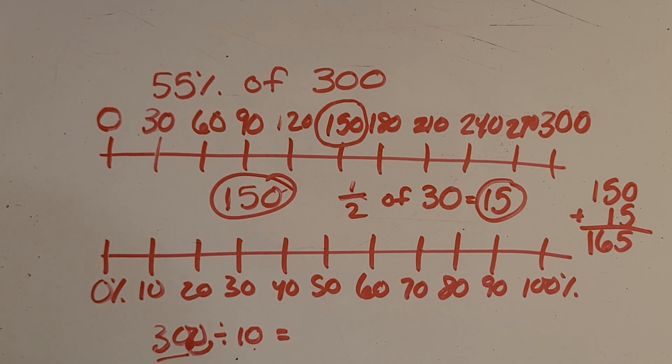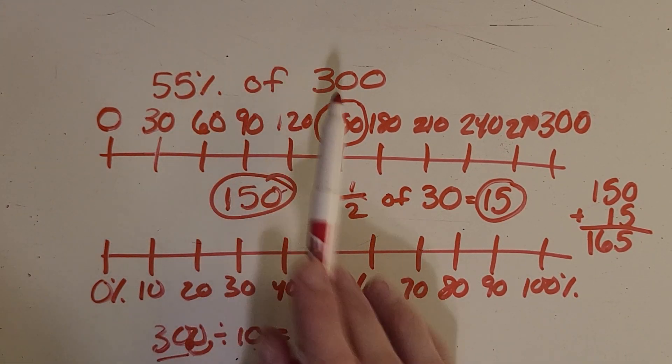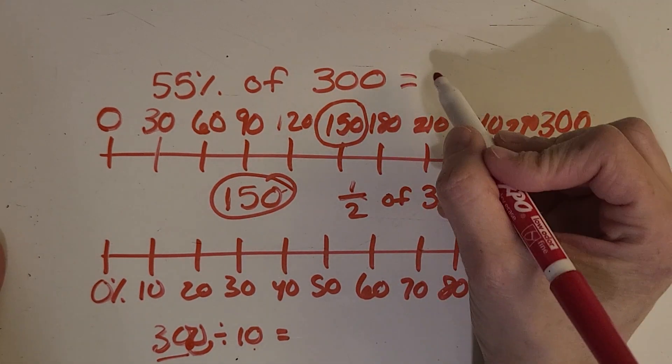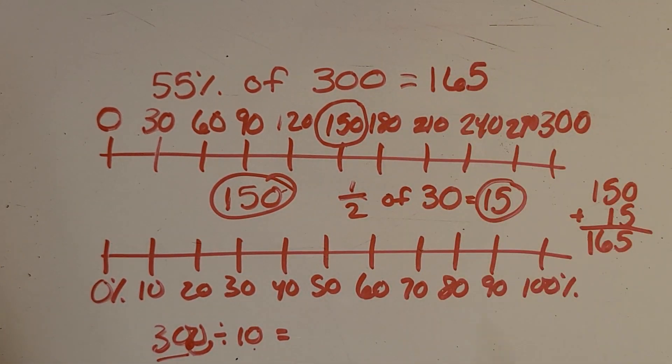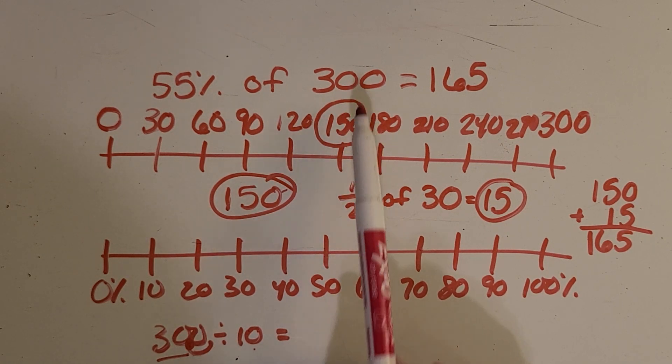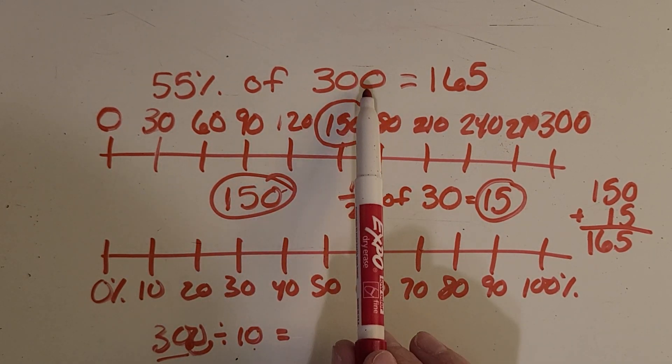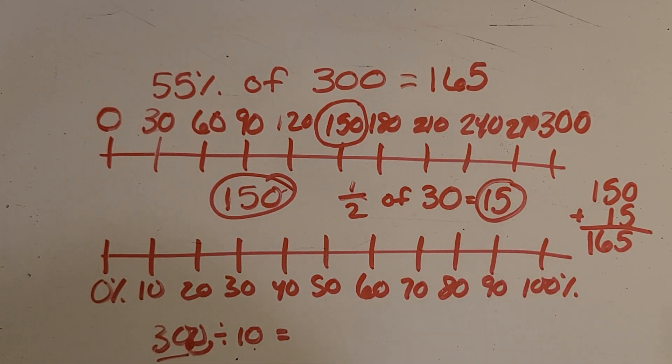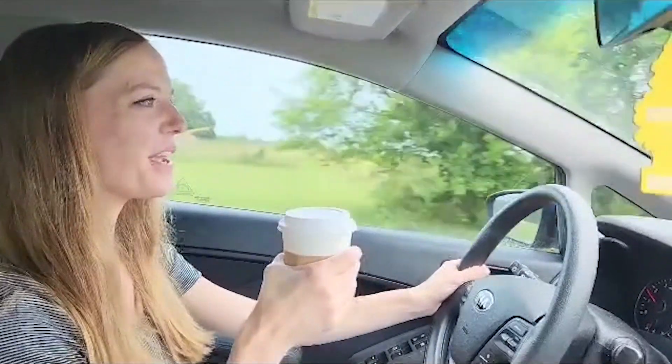All right, and we got 165. So 55% of 300 equals 165. Which makes sense because if you think back to what we did, half of 300 or 50% of 300 is 150 so we know it's gonna be a little bit more than 150. Great job! I hope this video helped you in your math class or at home. See you next time!